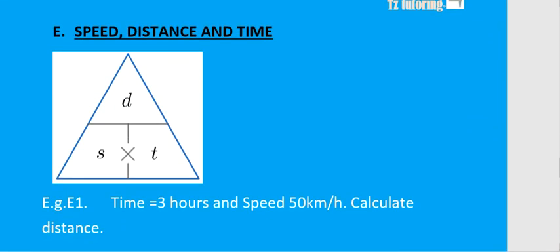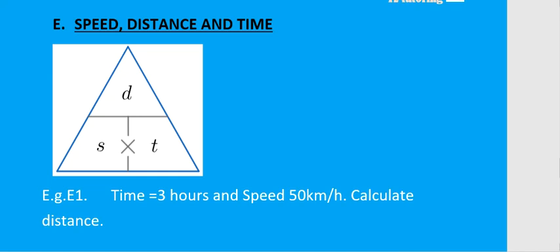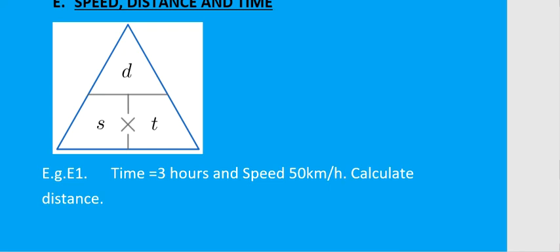Now for the ratios of speed, distance, and time. The DST triangle will help. To find distance, cover the D in the triangle — you're left with speed multiplied by time. So the formula for distance is speed times time.